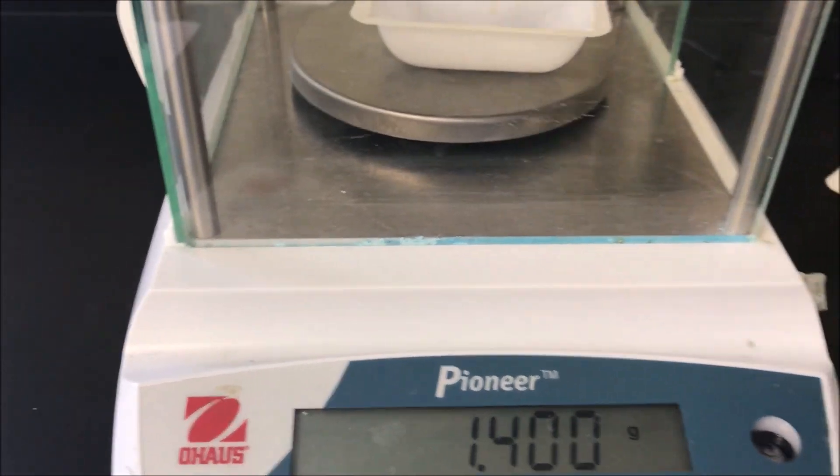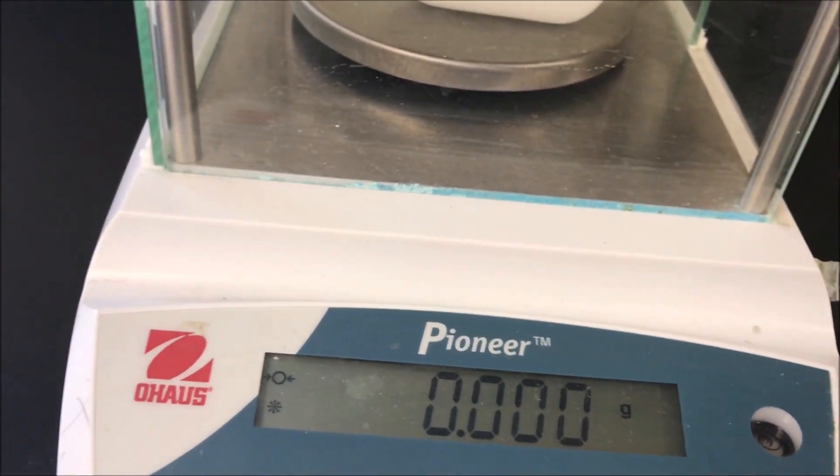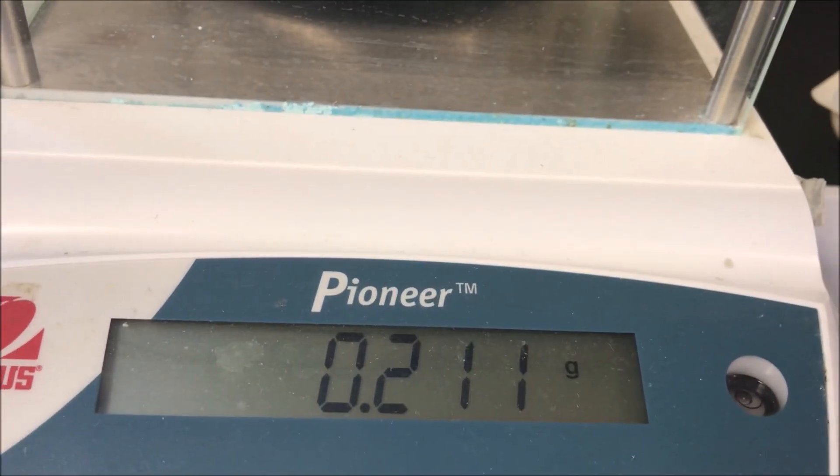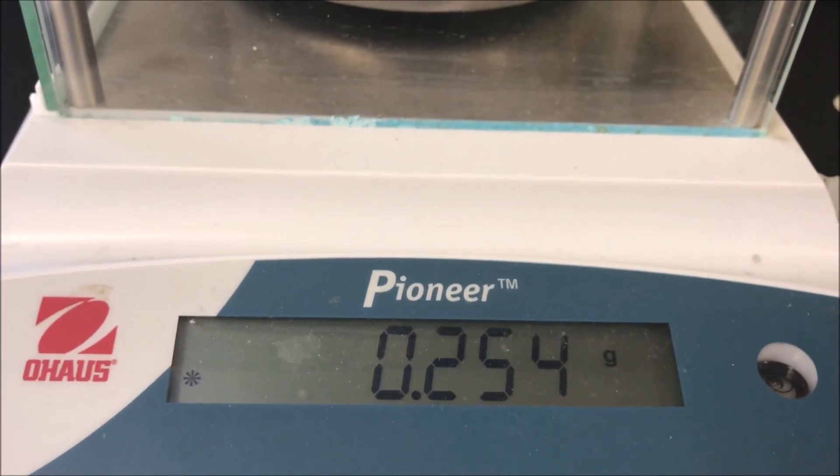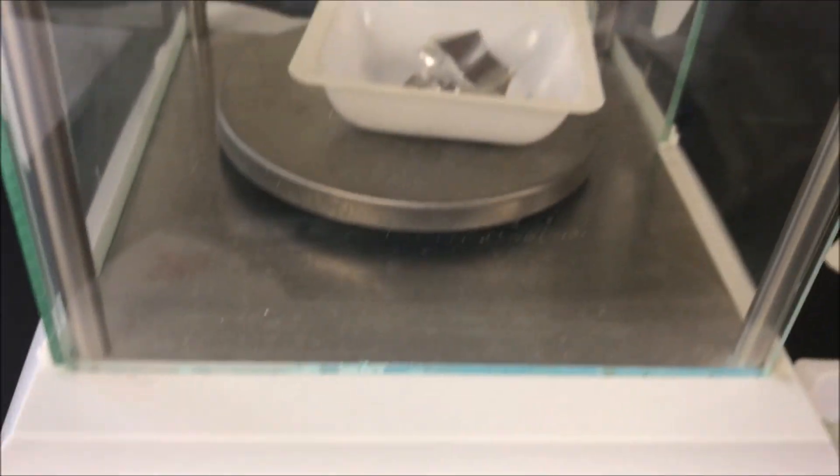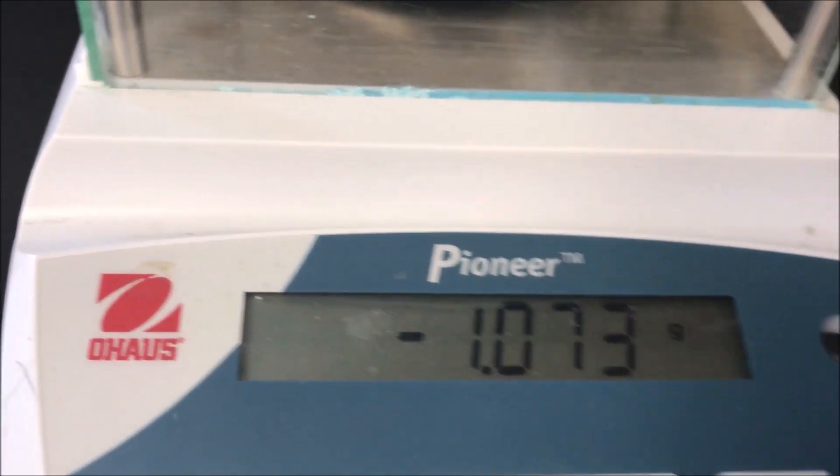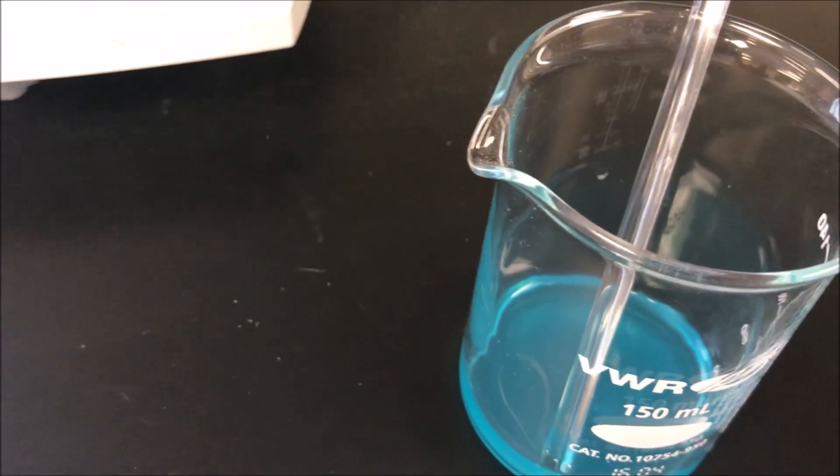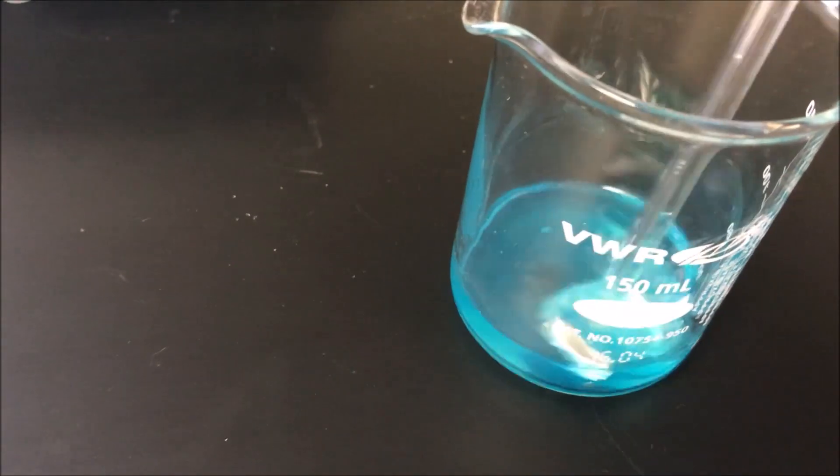Now weigh 0.25 grams of aluminum foil. It's actually 0.254 grams of aluminum foil. Then add the pieces of aluminum foil to the copper sulfate solution.